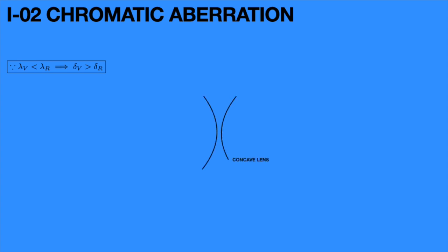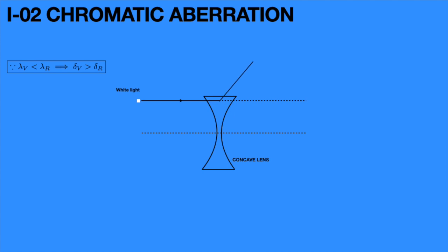Similarly, chromatic aberration occurs in concave lens also. If we take a point object in front of a concave lens, the white light ray is incident on it. Without the lens the white light goes straight, but due to the lens it splits into seven colors. If we extend to the backside of the violet and red rays, they form images on the principal axis at fv and fr respectively. Here, chromatic aberration ΔF equals fr minus fv, which is always negative because fv is greater than fr in a concave lens.